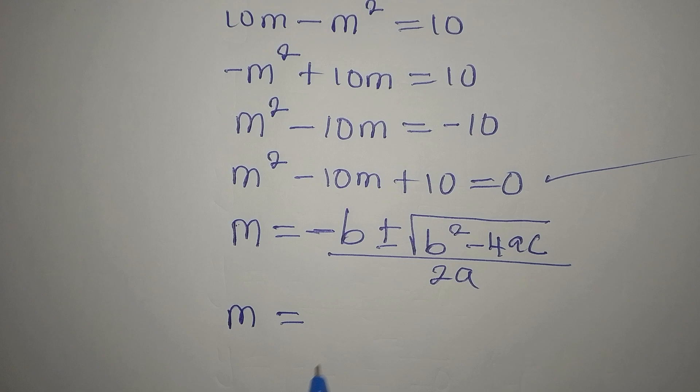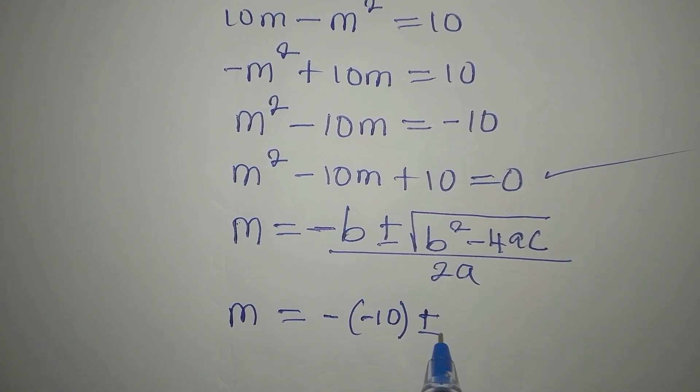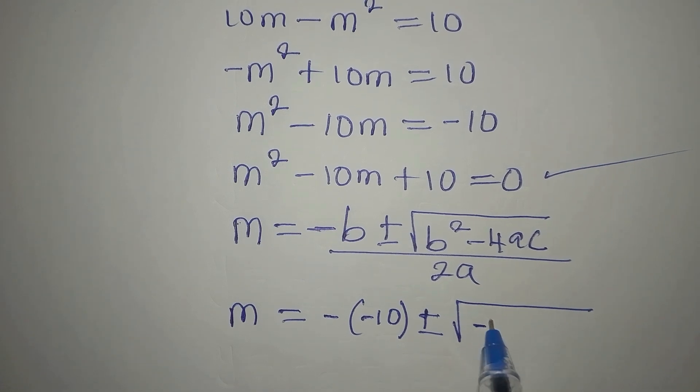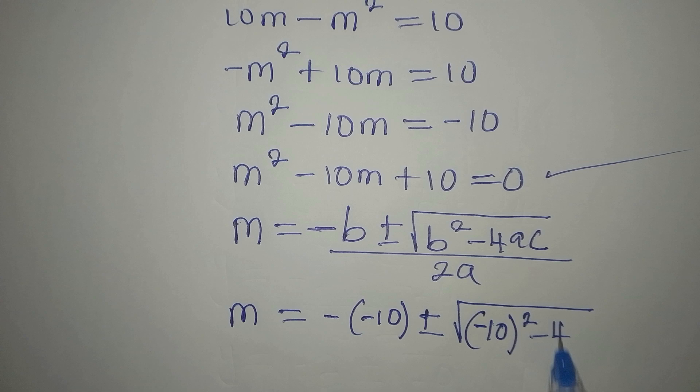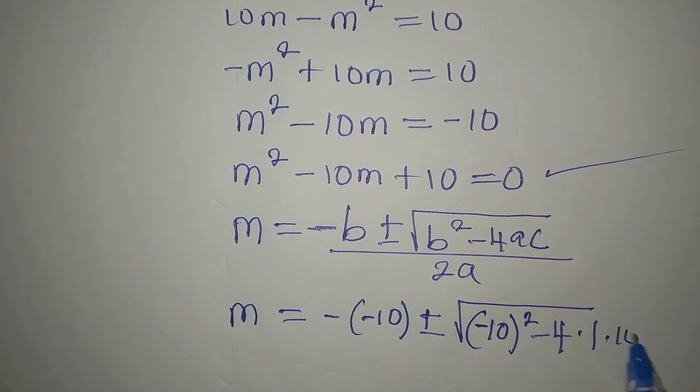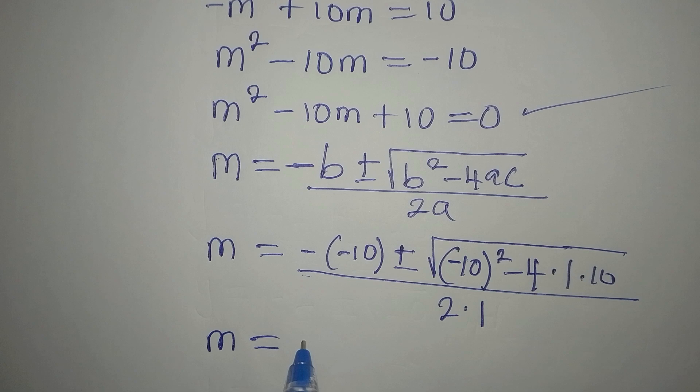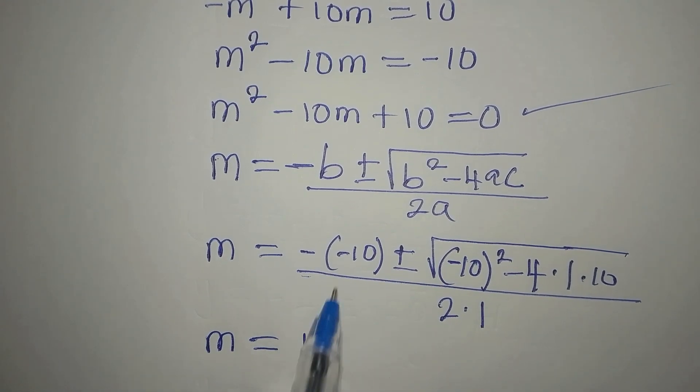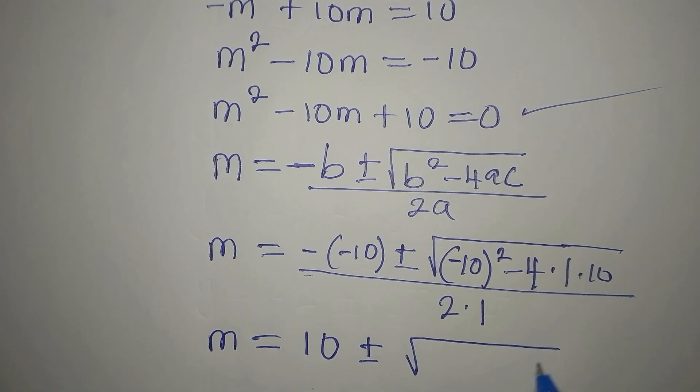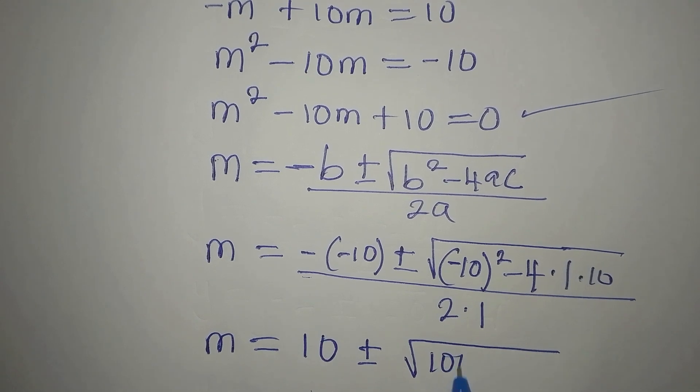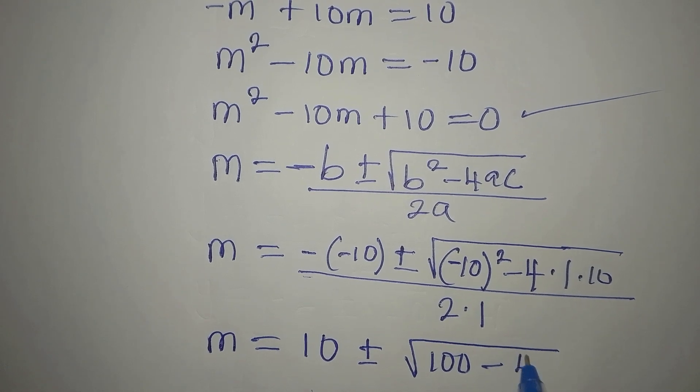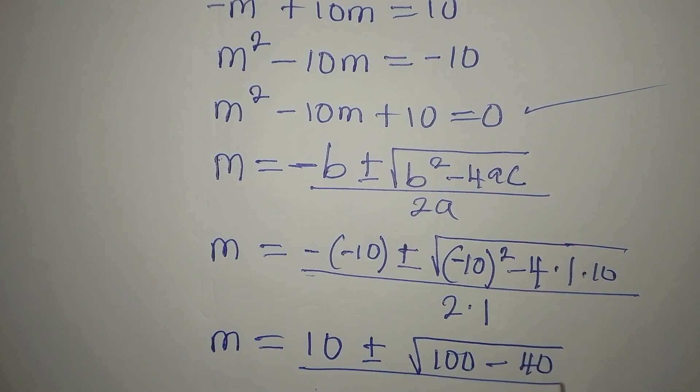So our m will now be negative. This negative is out. B is negative 10. Then we have plus or minus. We have square root of negative 10 squared minus 4 times 1 times our c is 10. So we will divide this by 2 times 1. 2 times 1 is 2. So our m now shall be positive 10. Negative negative. Then plus or minus. Minus 10 squared is 100. Then minus 4 times 1 times 10, that will give us 40. Then we will divide this by 2.